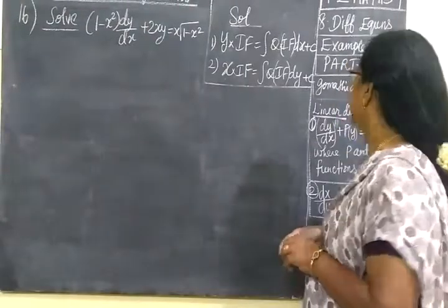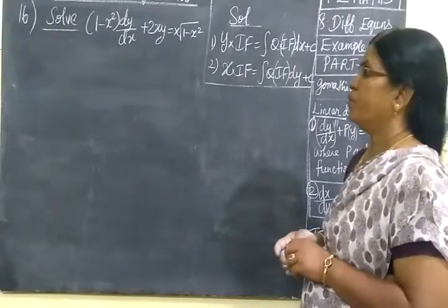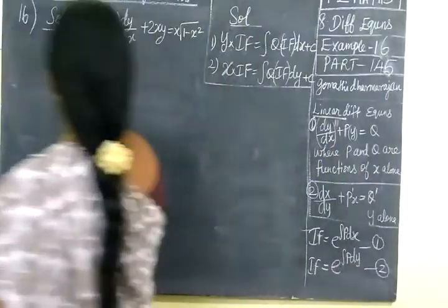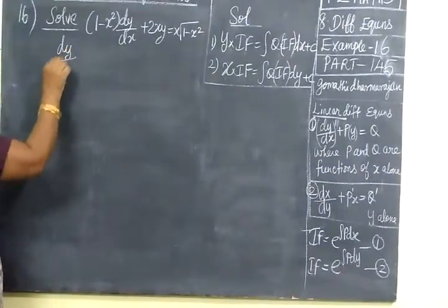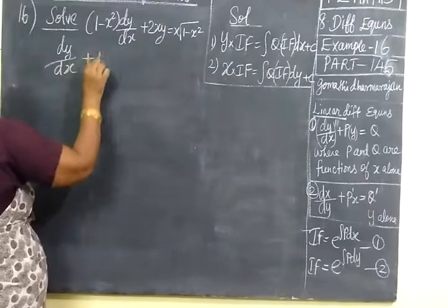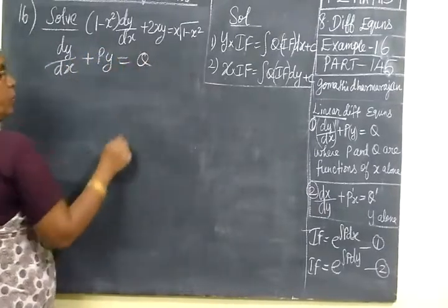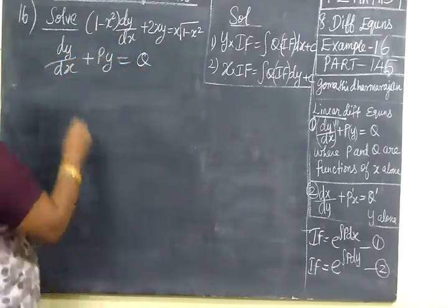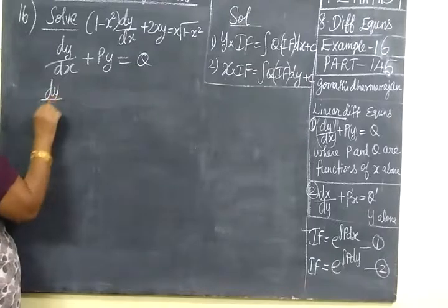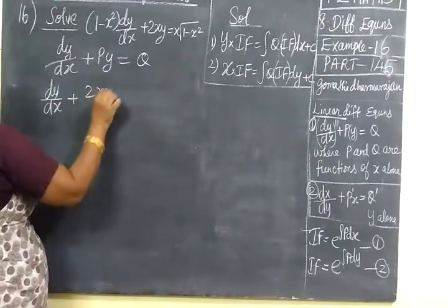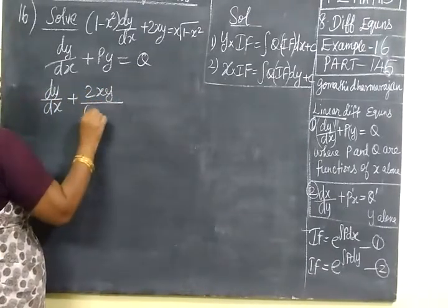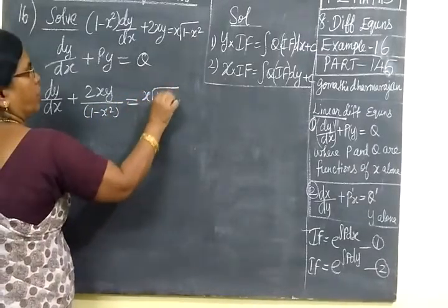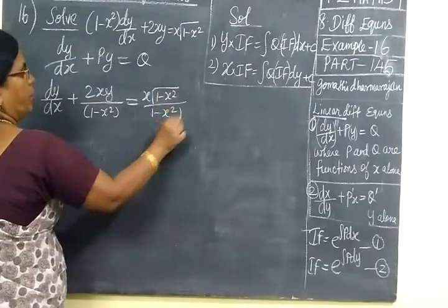Now we see example 16 part 145. First we have to write in the form dy/dx plus Py equal to Q. For that, divide the whole thing by 1 minus x squared. So dy/dx plus 2xy by 1 minus x squared equal to x times root of 1 minus x squared, divided by 1 minus x squared.